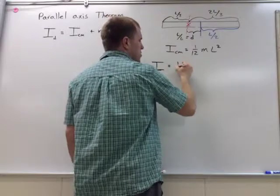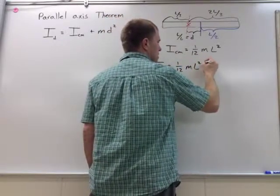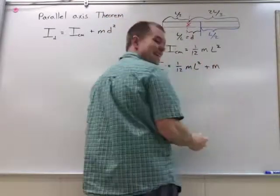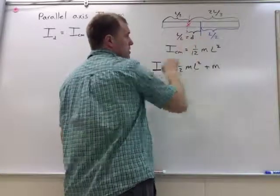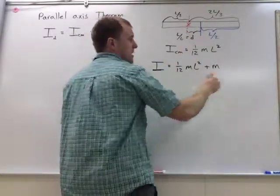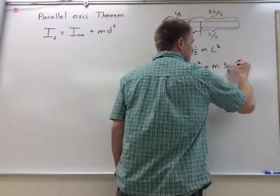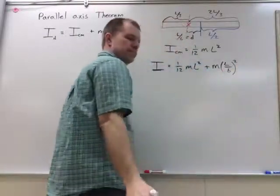I get one-twelfth m l squared plus the mass times the distance between the two parallel axes, and I get l over six squared.